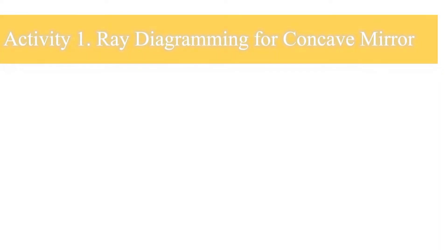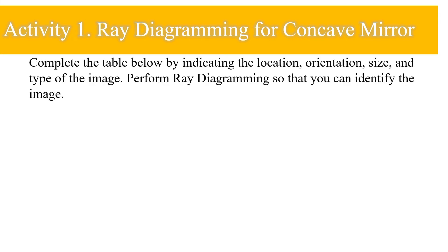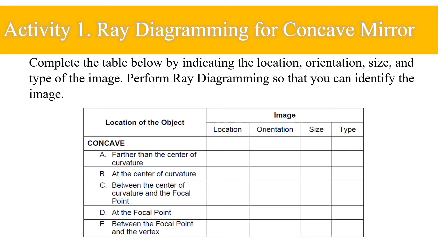You are now ready to take your first activity: ray diagramming for a concave mirror. Complete the table below by indicating the location, size, orientation, and type of the image. Perform ray diagramming to identify the image. You may pause the video and look back at the discussion about ray diagramming, especially the steps.